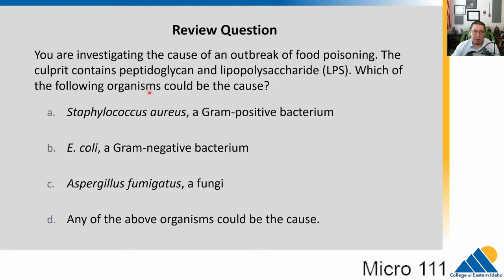The key here is first peptidoglycan — that's unique to bacteria, so that rules out the fungi. And then the lipopolysaccharide is going to differentiate between the remaining two. Remember that gram-negative bacteria have that lipopolysaccharide, that LPS. That's what causes them, when they get destroyed, to release it as a toxin. It can cause toxic shock. So the answer would be B. E. coli, a gram-negative bacterium.